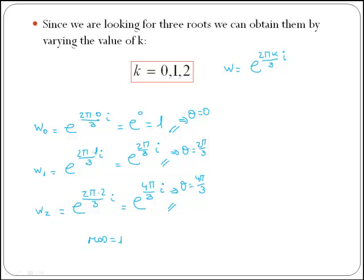So if you wanted to plot them, remember we need to plot a circumference with radius equal to 1, and now we need to place the three angles. Angle 0 is easy because it will be placed here, so here is w0.